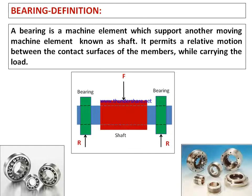A bearing is a machine element which supports another moving machine element known as a shaft. A bearing permits relative motion between the contact surfaces of the members while carrying the load. The meaning of bearing itself is to bear, take up, or support. In this figure, the shaft is mounted on two bearings — left-hand side and right-hand side — and the shaft carries a central load, resulting in reactions at the two bearings.